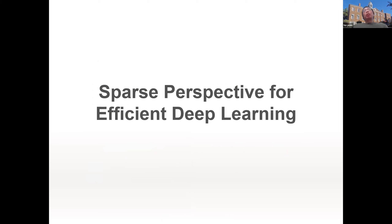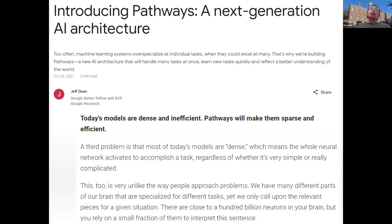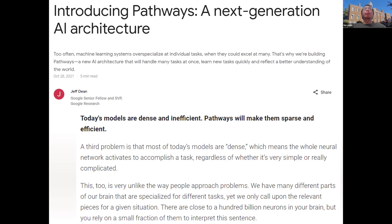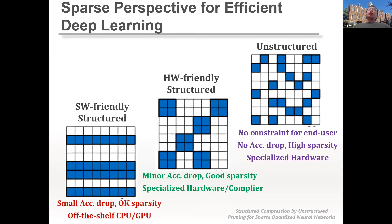Sparsity is now very important. According to Google's Pathways announcement this October, one of their key optimization goals is to introduce sparsity into their next-generation architecture. Jeff Dean's blog clearly mentioned that Pathways is a sparsity-aware design to make deep learning execution more efficient, since current models are very dense and inefficient.